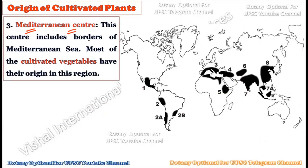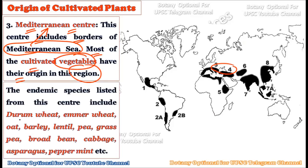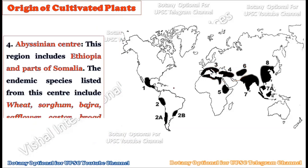The third center is the Mediterranean center of origin, which includes the borders of the Mediterranean Sea. Most cultivated vegetables have originated from this region. The endemic species include durum wheat, emmer wheat, oat, barley, lentils, peas, grass pea, broad beans, cabbage, asparagus, and peppermint. The Mediterranean center is particularly famous for the origin of vegetables.